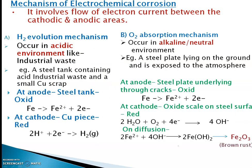Now we will study the electrochemical corrosion mechanism. We will study two types: one is the hydrogen evolution mechanism and the other is the oxygen absorption mechanism. Hydrogen evolution means hydrogen evolves, and in the oxygen absorption mechanism, oxygen is absorbed.